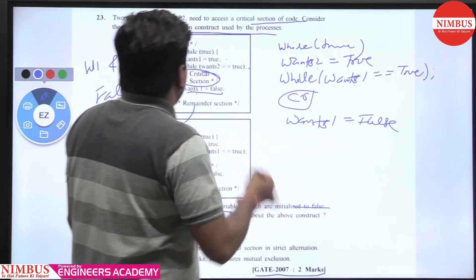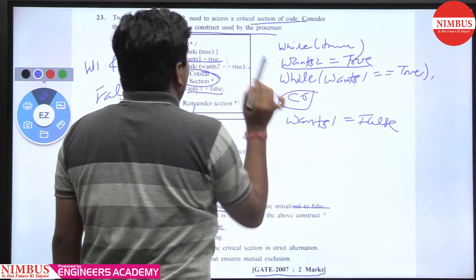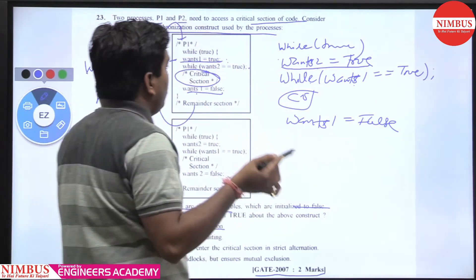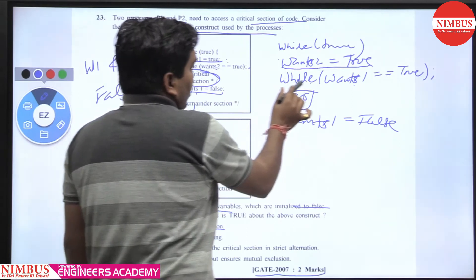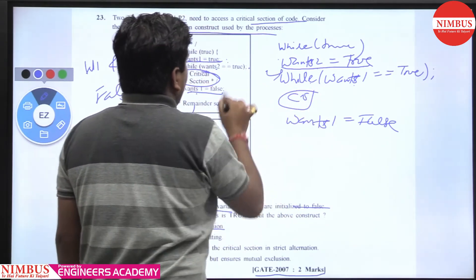Initially both processes execute wants1 and wants2 true. Then what will happen? If both processes execute wants1 and wants2 true, then wants2 equal to true and wants1 equal to true, then both are in busy waiting. Getting my point? Both are in loop.